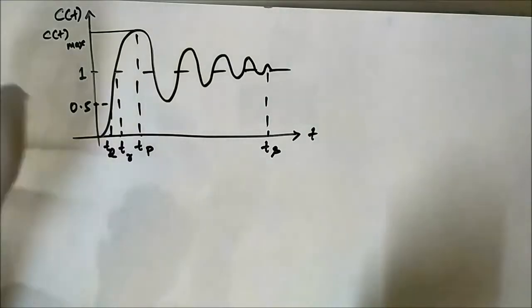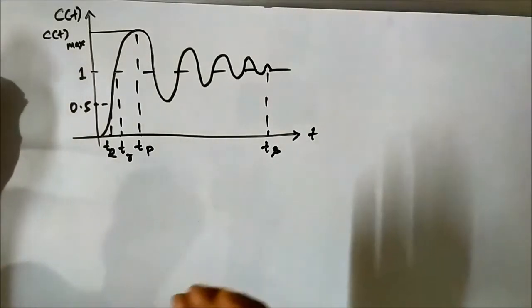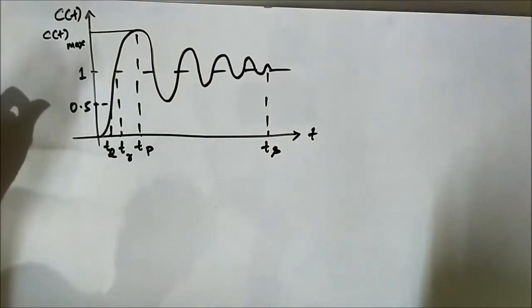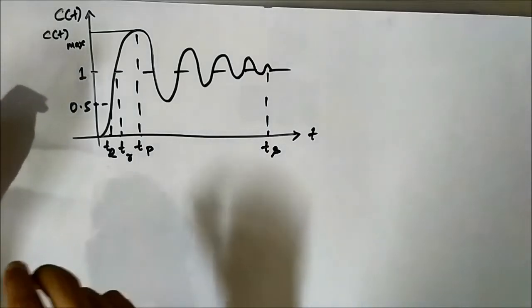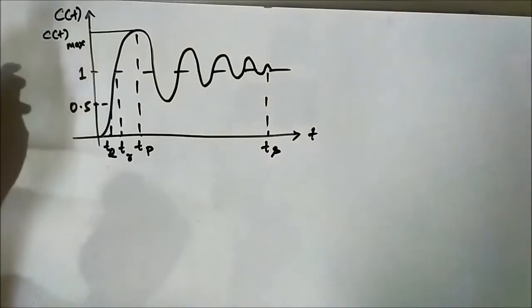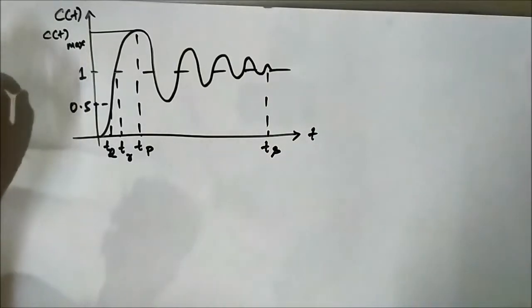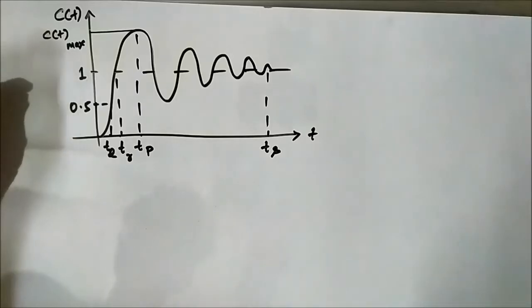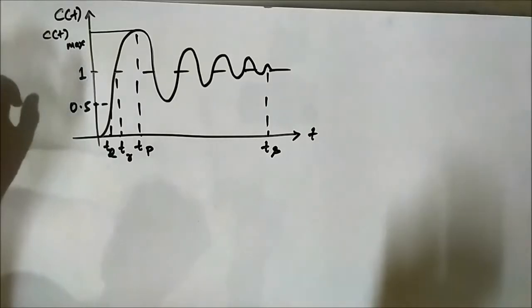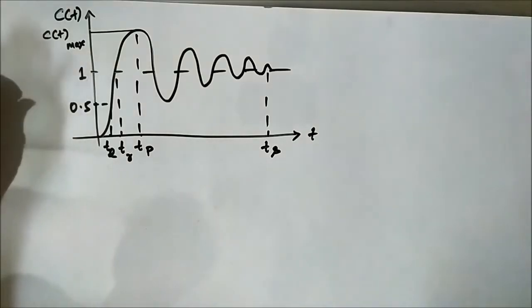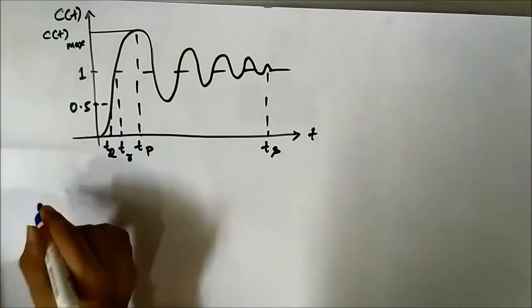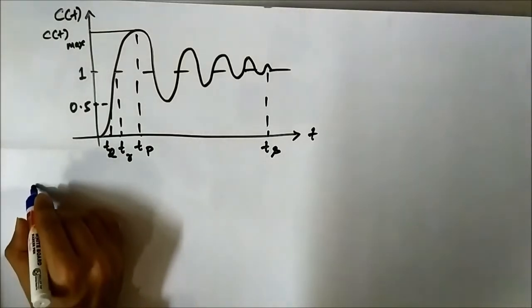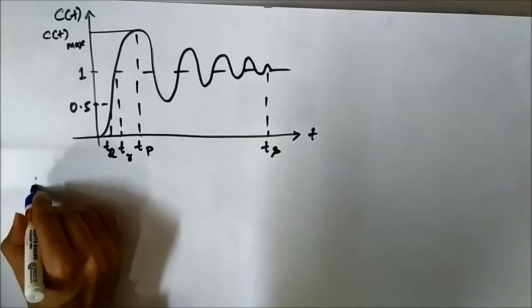Those parameters were delay time, rise time, peak time, and settling time. In this video we are going to discuss them in detail and write down their mathematical expressions. So first is delay time.